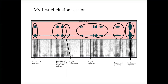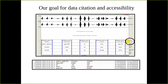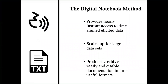What I'm going to show you today is a method for creating and processing elicited data that makes data citation and accessibility possible within less than half an hour after its original creation. Our goal is to create something like what we see here, where each elicited item has a unique internal reference ID, which together with a persistent identifier will allow you to cite each item in publications and other materials. The text data is also time-aligned and searchable, meaning anyone can easily find the particular section of recording that you have cited. This method provides nearly instant access to time-aligned elicited data, scales up for large data sets, and produces archive-ready and citable documentation in three useful formats.